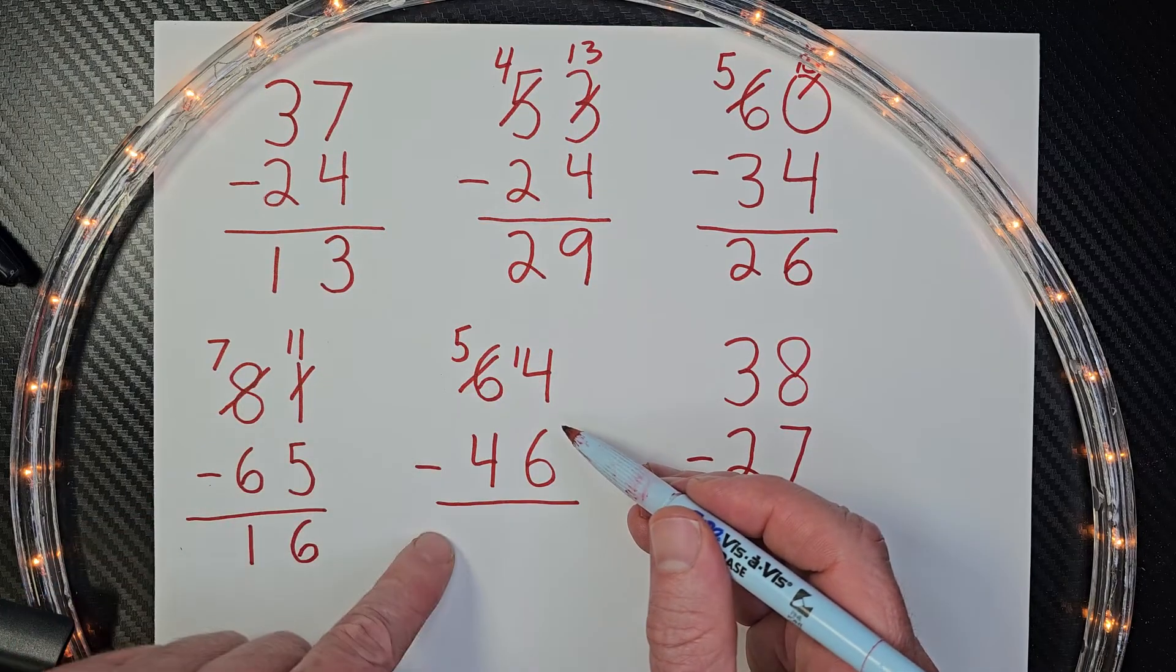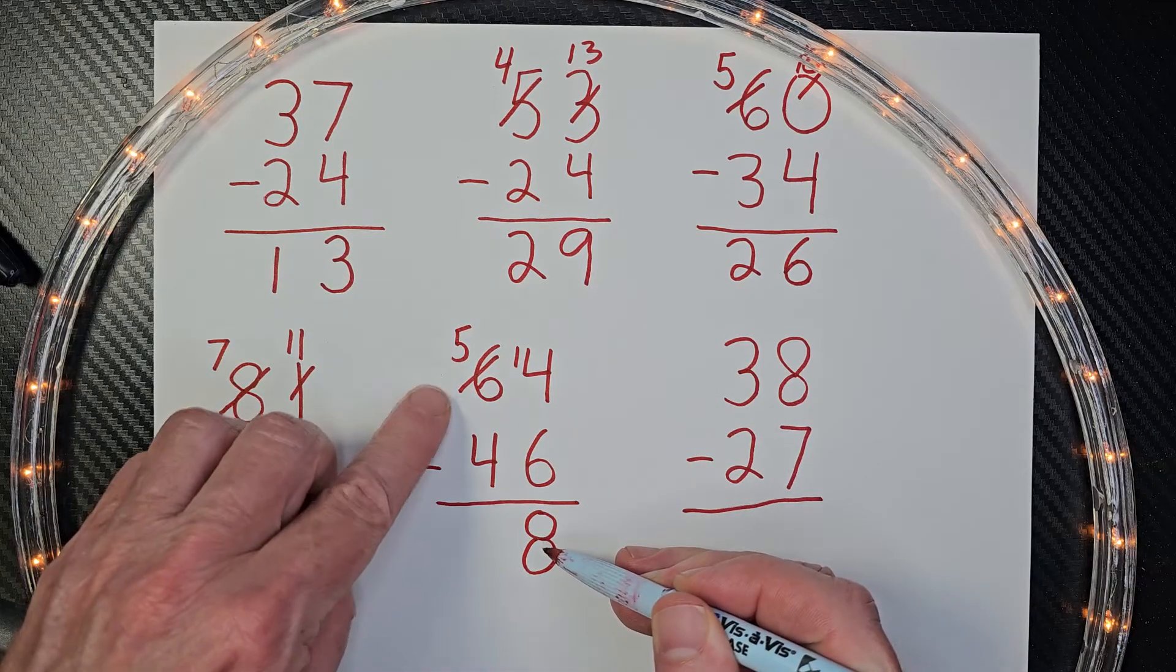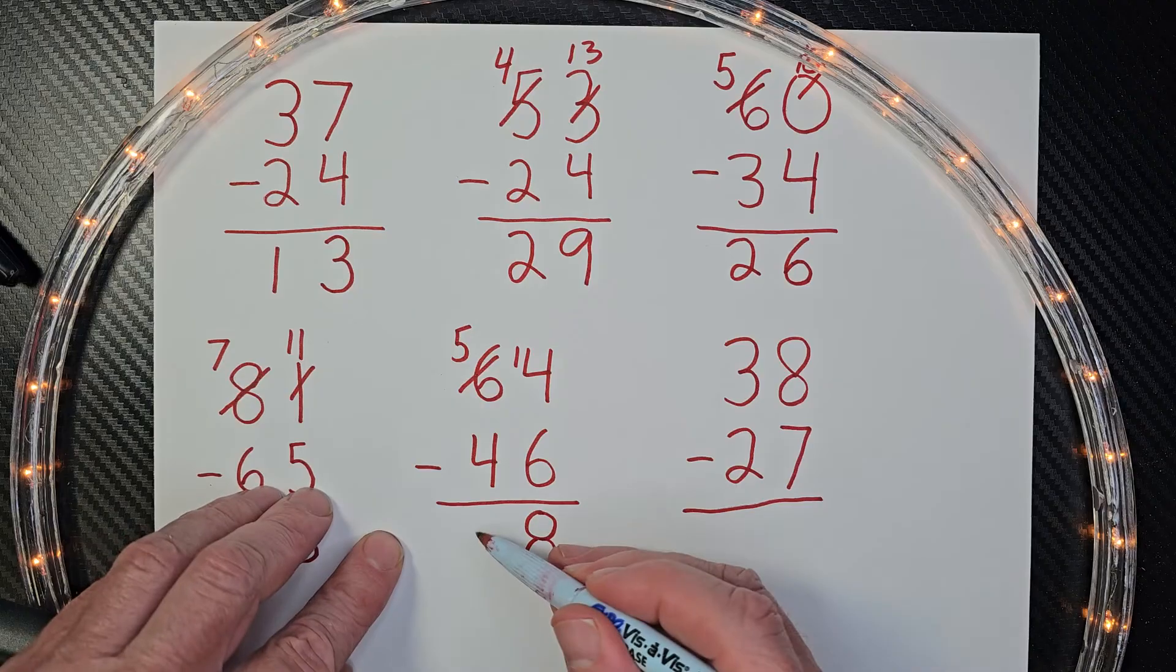So 14 minus six would equal eight. And then five minus four would equal one.